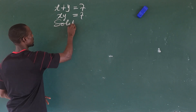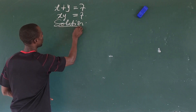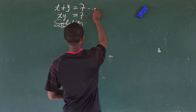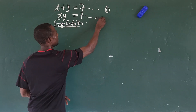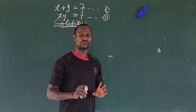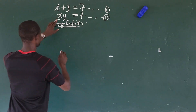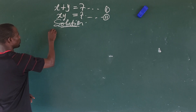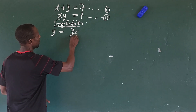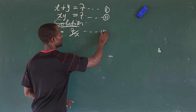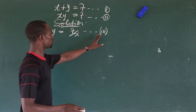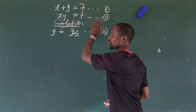So this is our question. Let's take x plus y = 7 as equation 1 and xy = 7 as equation 2. From equation 2, let's make y the subject of the formula.